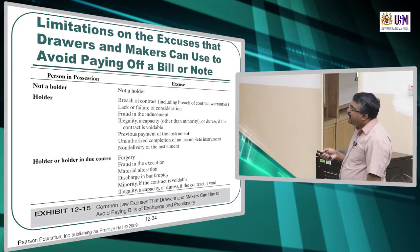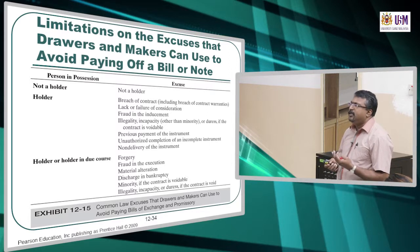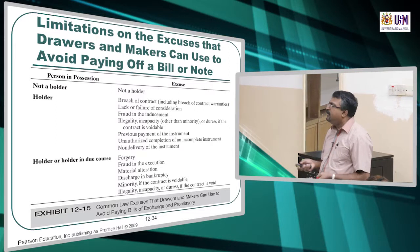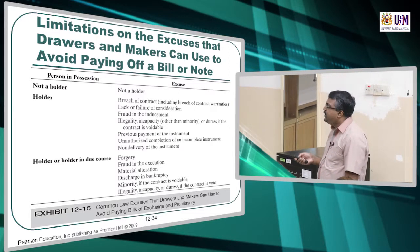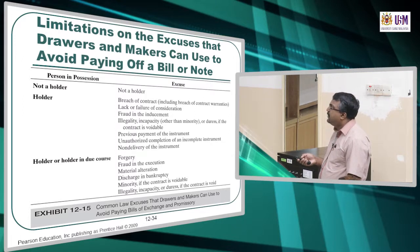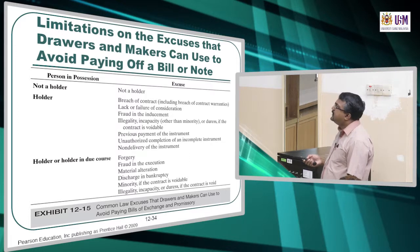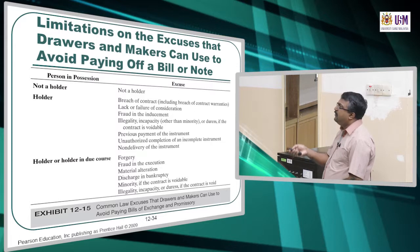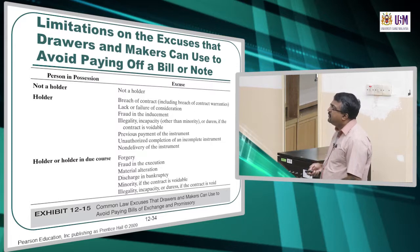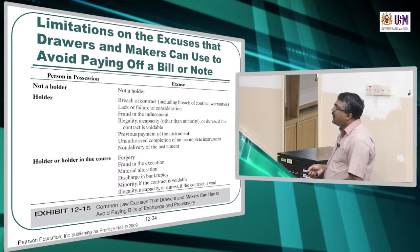Under common law, excuses for non-payment include: breach of contract for the sales of goods or services, lack or failure of consideration meaning there is no value in the transaction, fraud, illegality, incapacity such as minority — below age 18 — bankruptcy, and alteration. So common law appears more comprehensive compared to ULB.